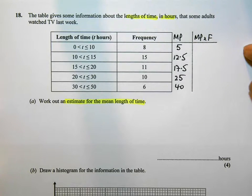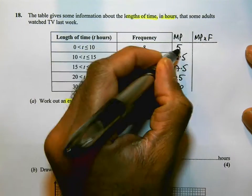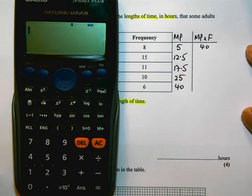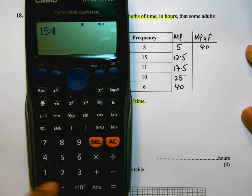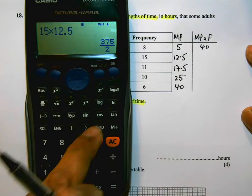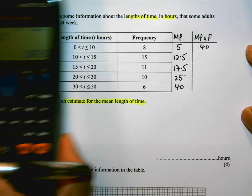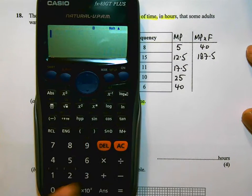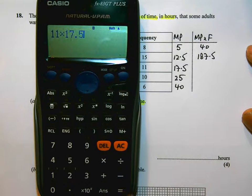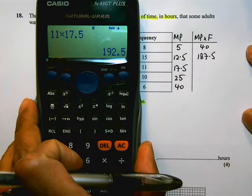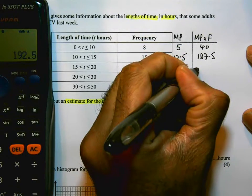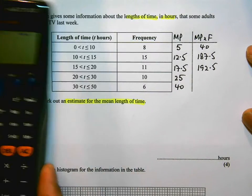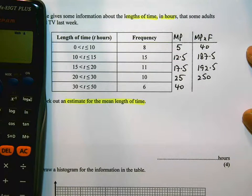So now we're going to do the midpoint times the frequency. 8 times 5, I could do that, 40. But the rest, I'm going to use my calculator to make sure that I do it and get it correct. 15 times 12.5, 187.5. 11 times 17.5, 192.5. 10 times 25, that's going to be 250. And 6 times 40, that's going to be 240.